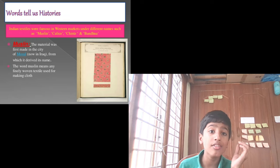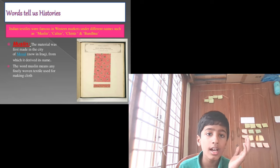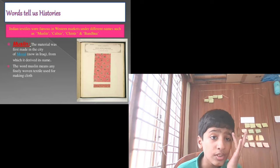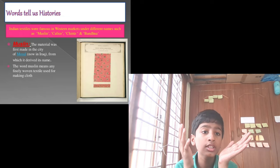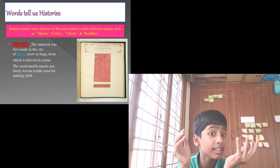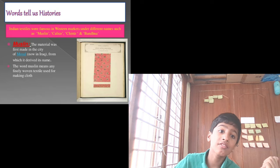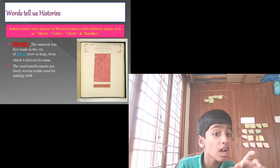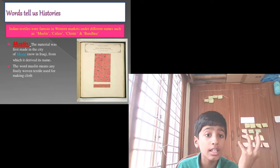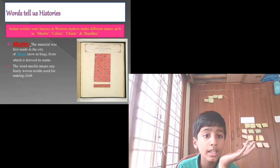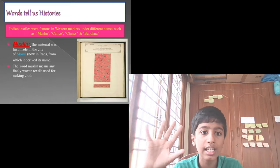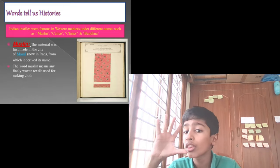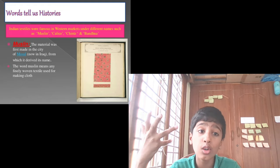Indian textiles were famous in western markets under different names such as muslin, calico, chints, and bandana. Muslin — the material was first made in the city of Mosul, now in Iraq, from which it derived its name. The word muslin means any finely woven textile used for making clothes.